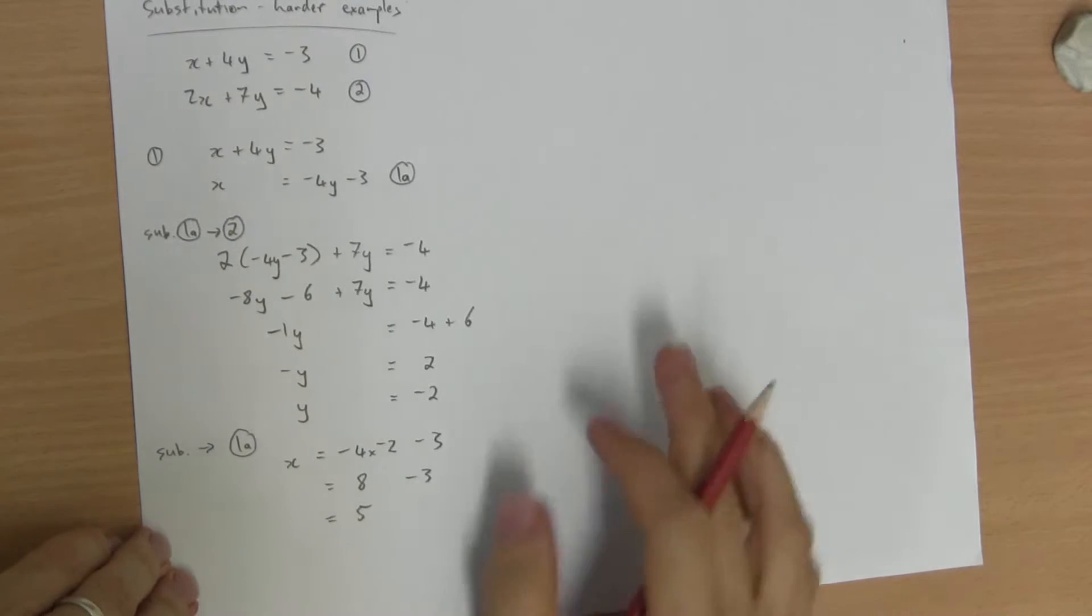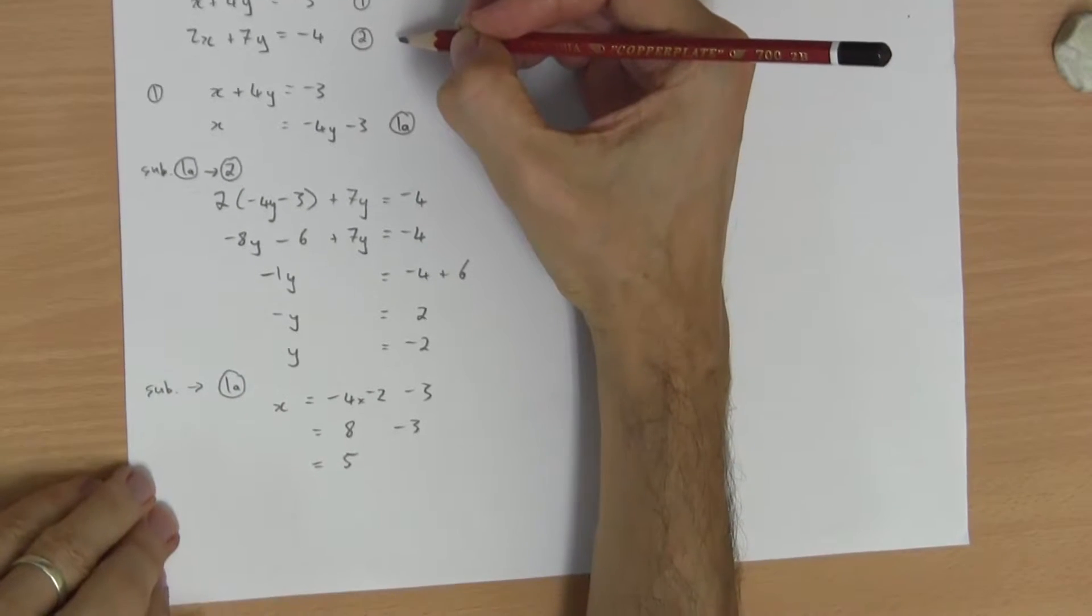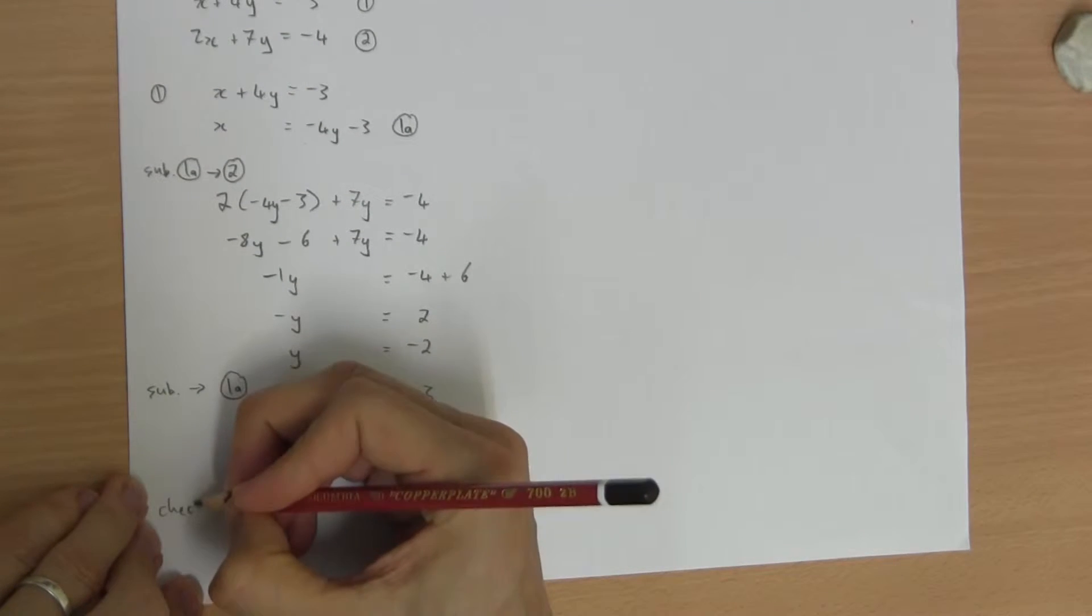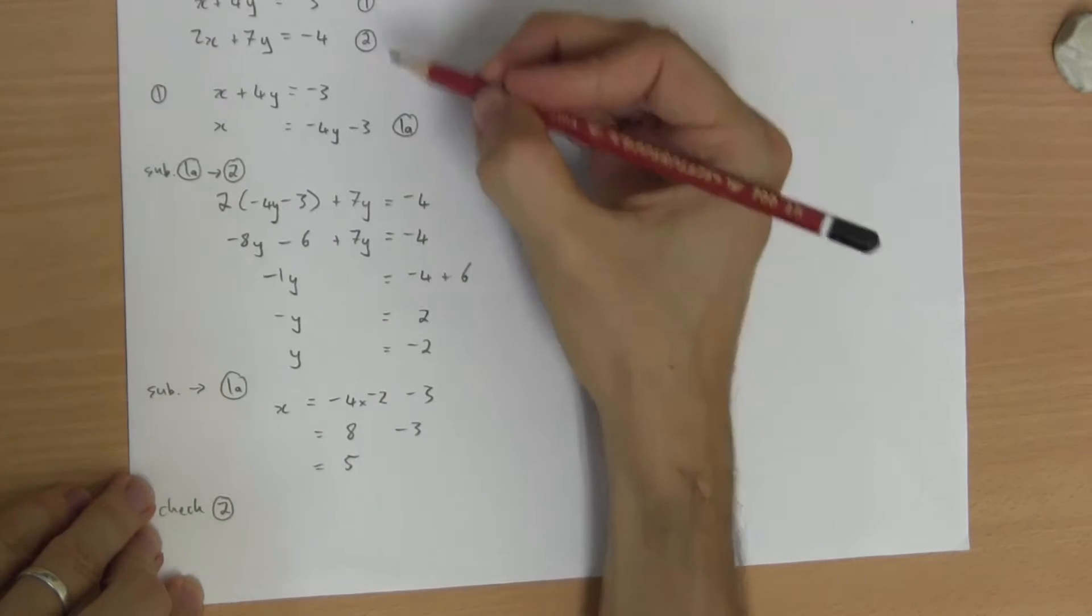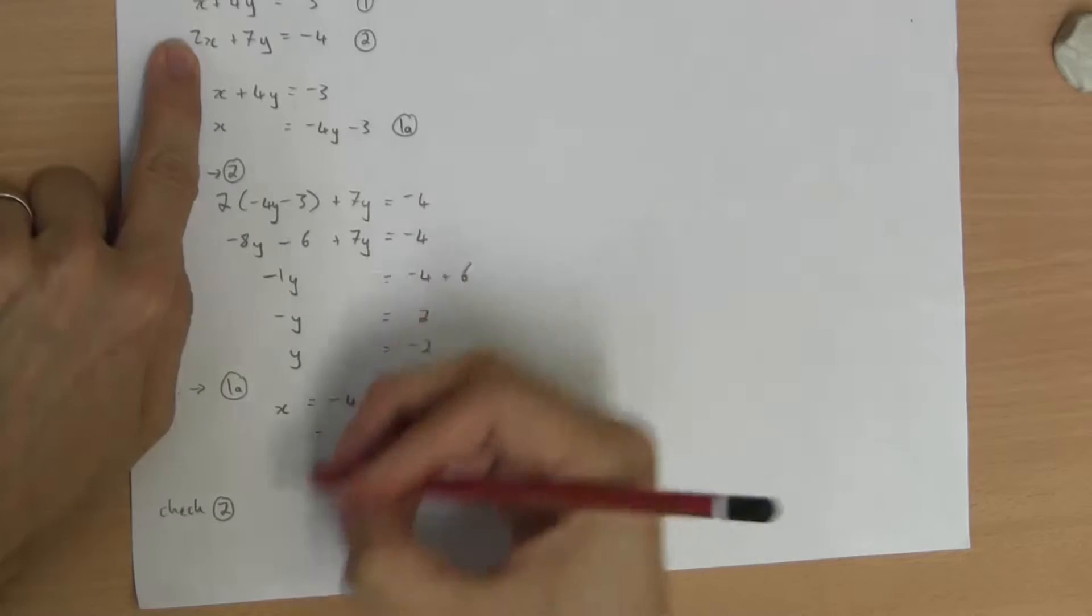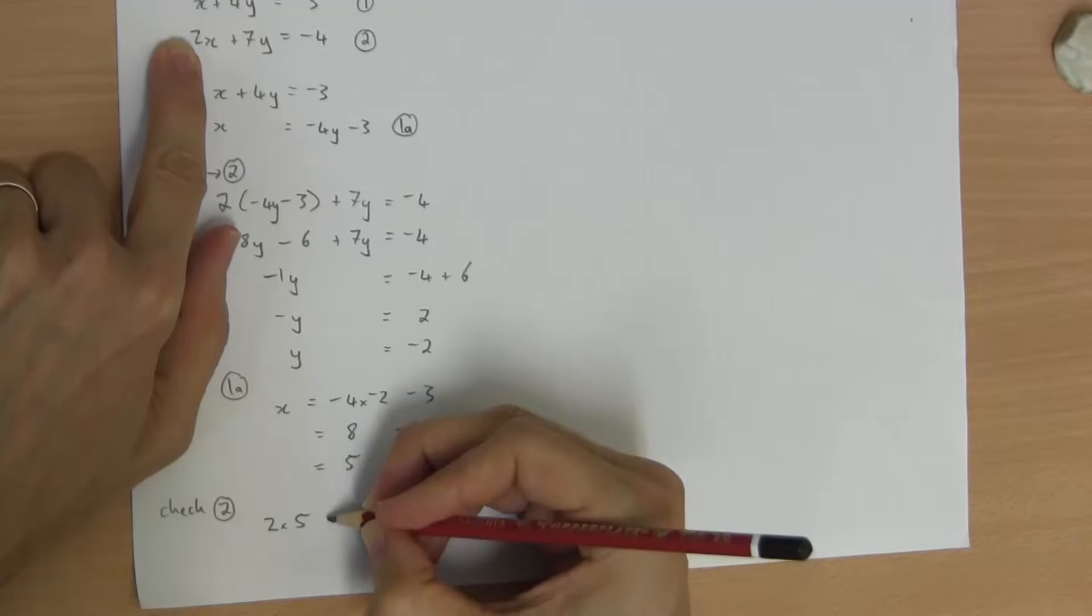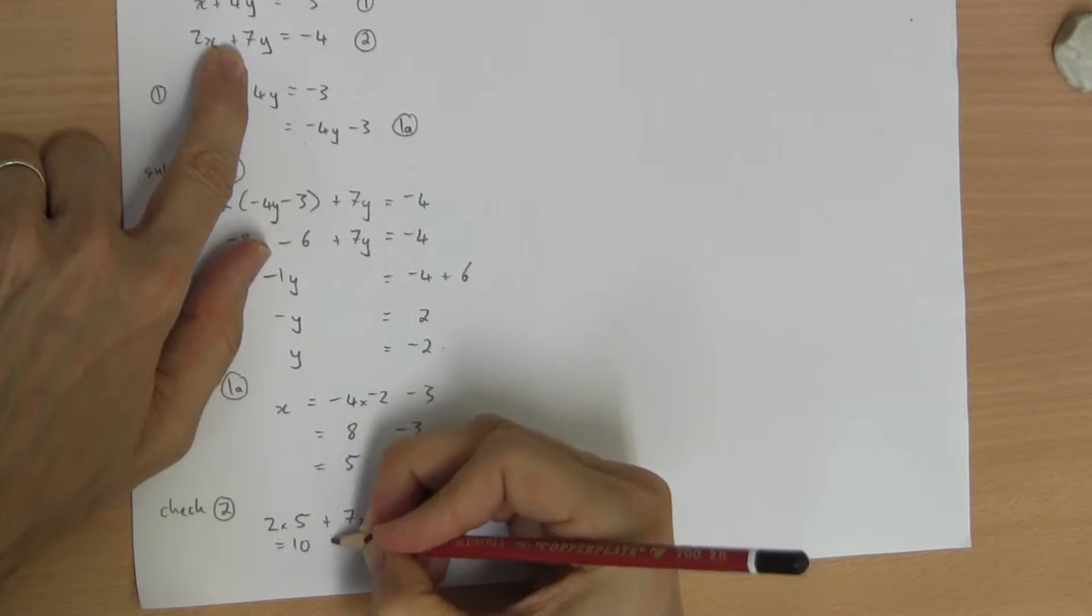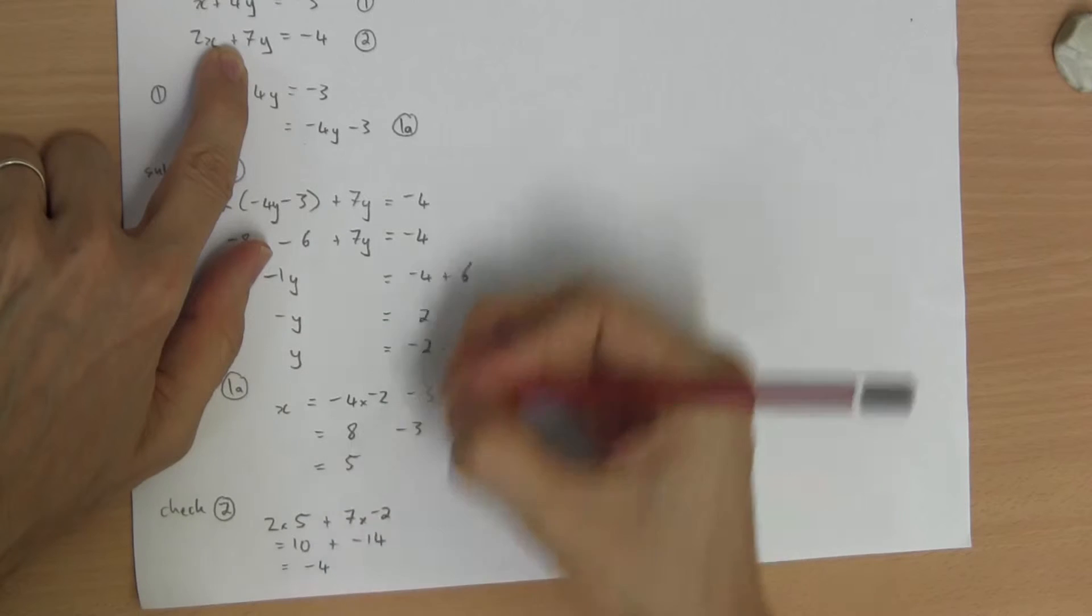Can I check my work? Of course. Let's check it with equation 2. I'm not sure I can quite put that on the screen at once. Yes, I can just. So let's try it. Check equation 2. There's no point in my checking with equation 1 because 1a is the same as 1. Check the other equation, number 2. 2 times x plus 7 times y, which is 10 plus negative 14, which is negative 4, is correct.